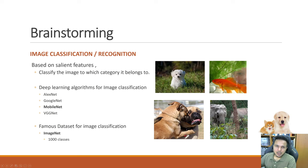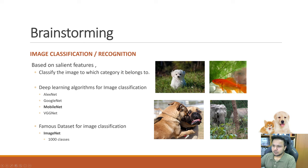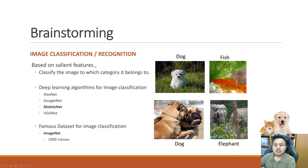Before diving into actual coding, let's do some brainstorming. What is image classification and recognition? Based on salient features — for example, this is a dog image, and we have grass and some background. But the most salient feature in this image is obviously the dog. Similarly, the most salient feature in another image is a fish, and in another it is a dog, and in another it's an elephant.